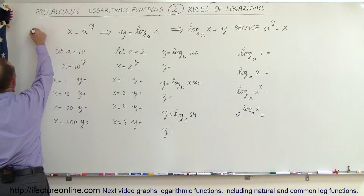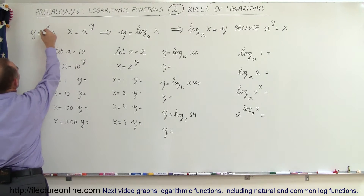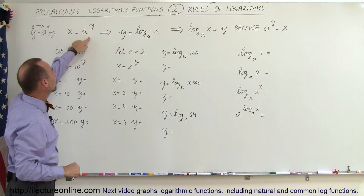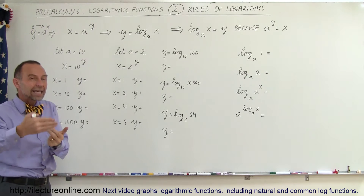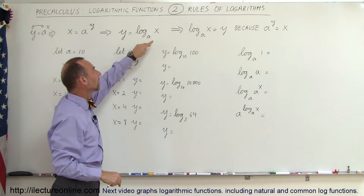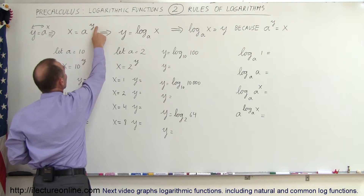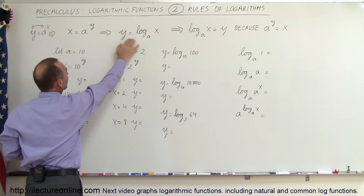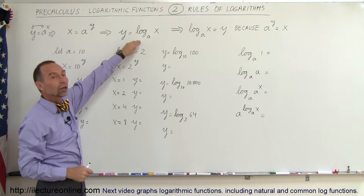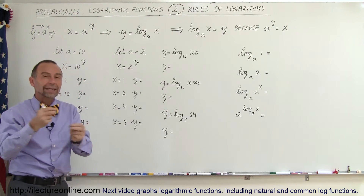Remember that we started out with the exponential function y equals a to the x power. Now if we interchange the y and the x — the dependent and independent variable — we get x equals a to the y. How do we write that in the form of y equals some function of x? It turns out this is the same as y equals the log of x, with the same base as the exponential. So when we reverse the y and the x in an exponential function, we get the logarithmic function. Basically, a logarithmic function is an exponential function with x and y interchanged.